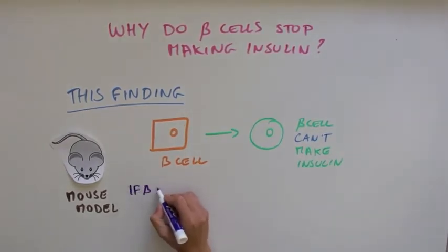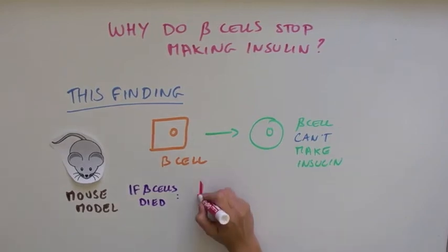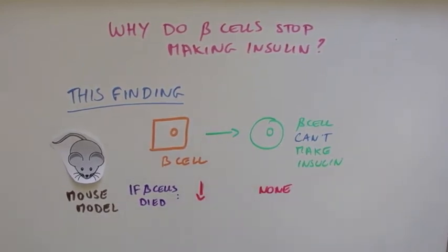If beta cells were dying more quickly than new cells were being made, as was previously thought, then the number of yellow cells would go down and there would be no green cells. But that is not what they saw.